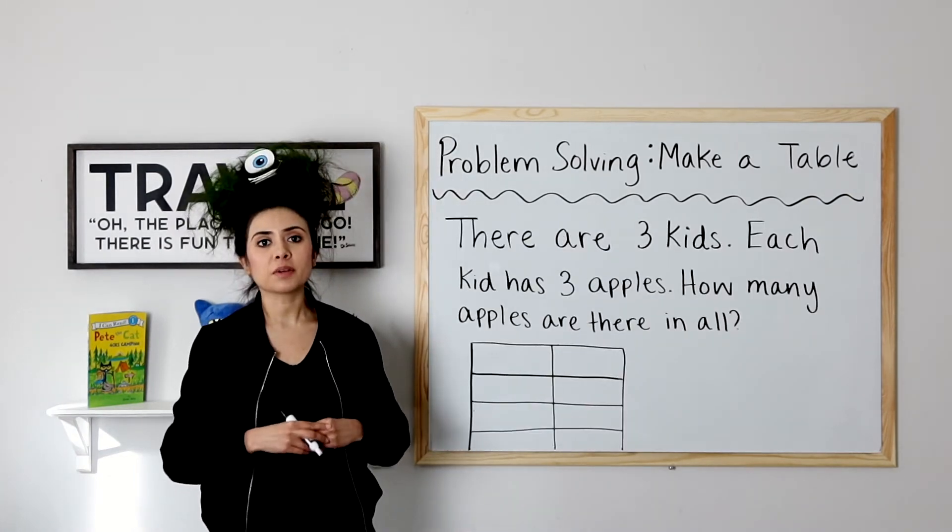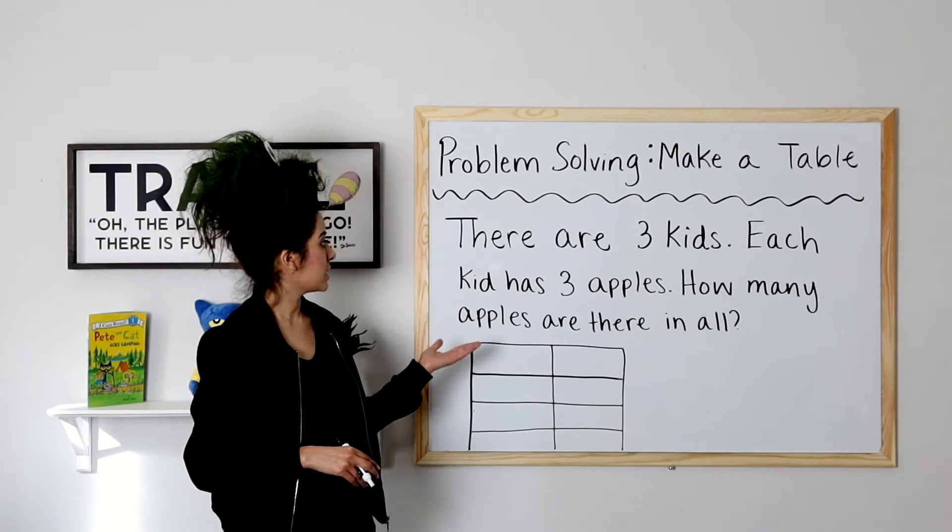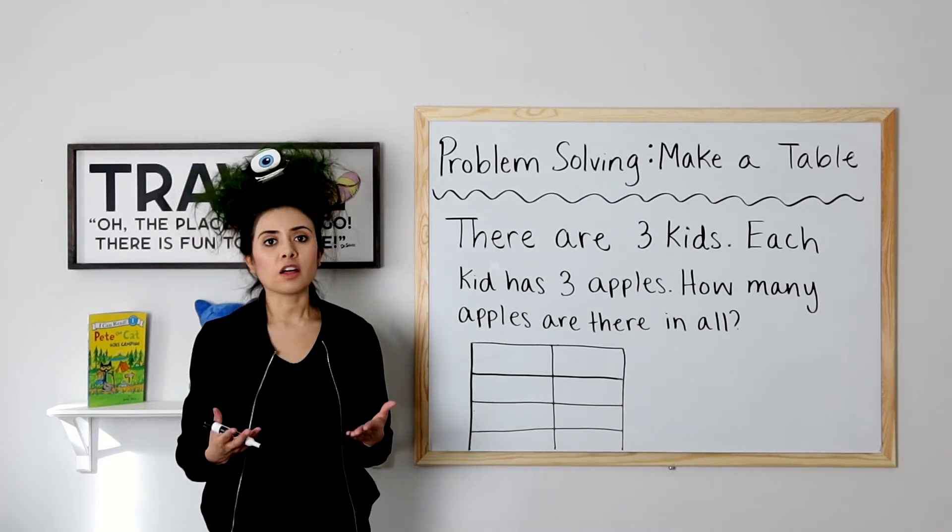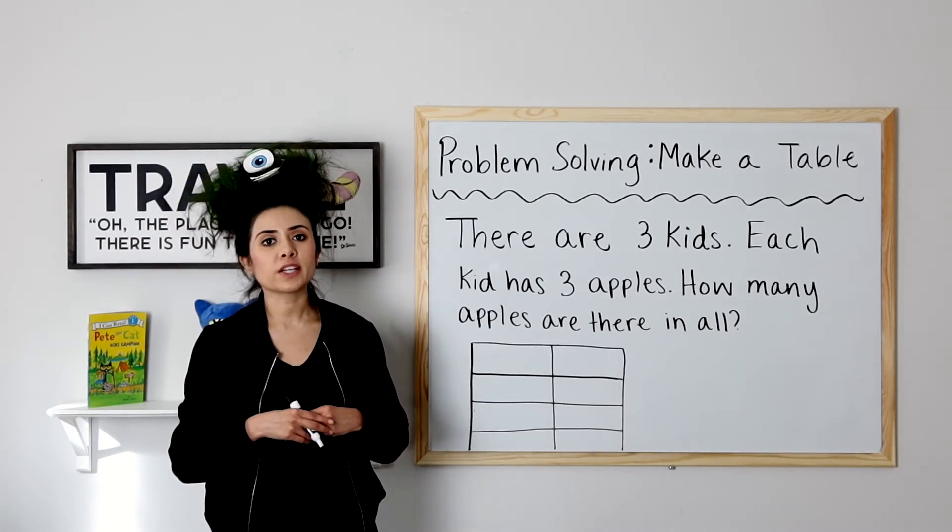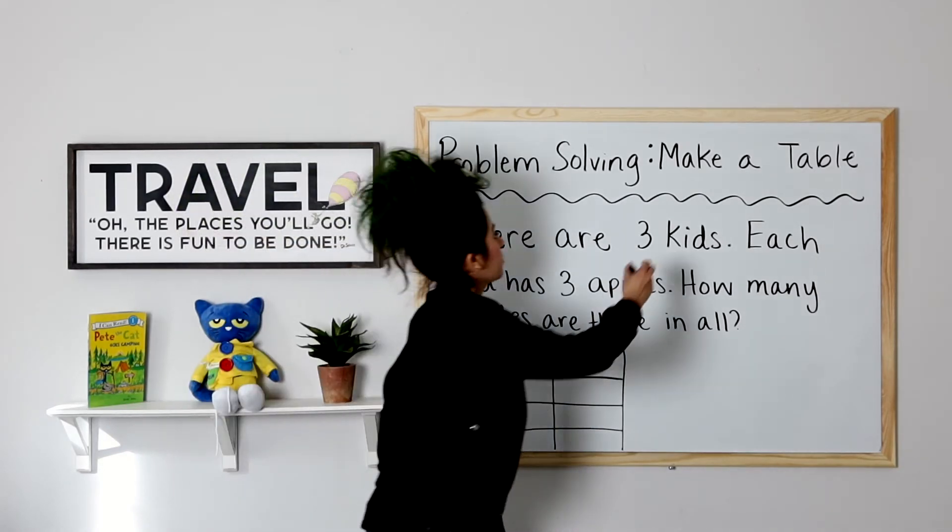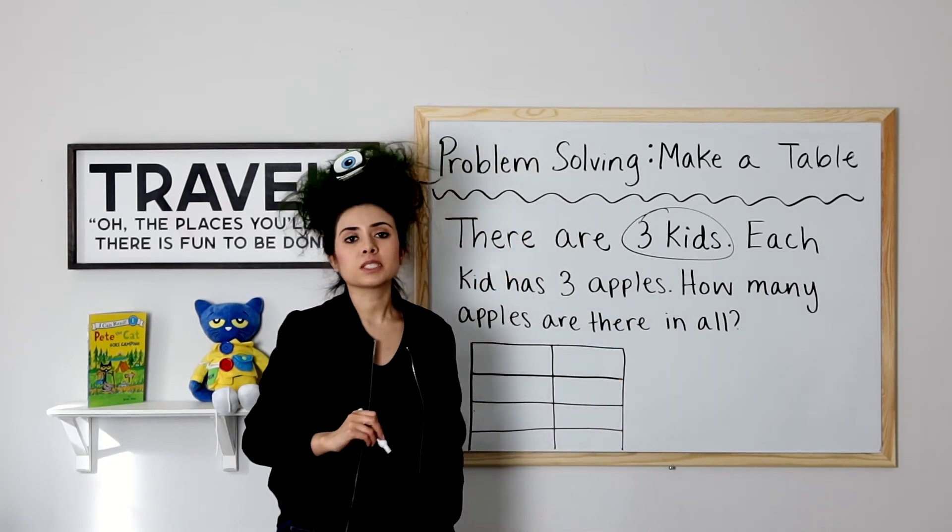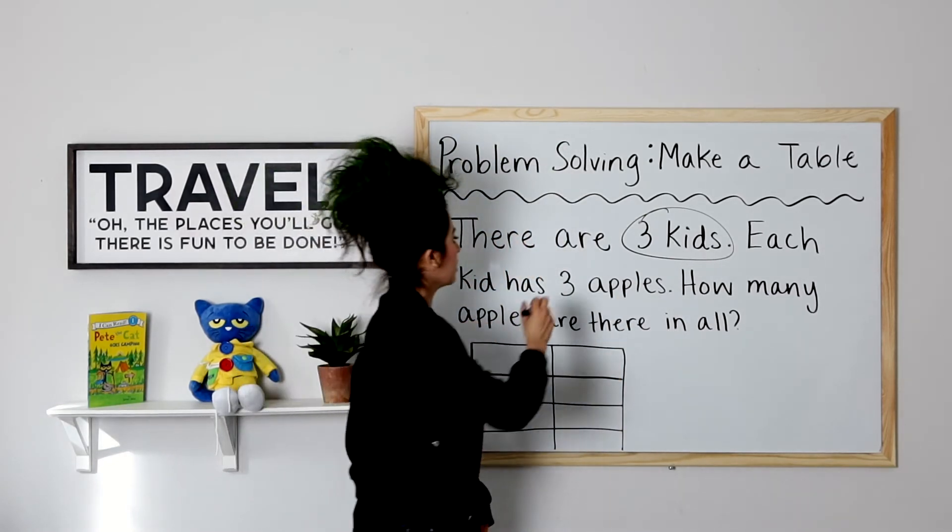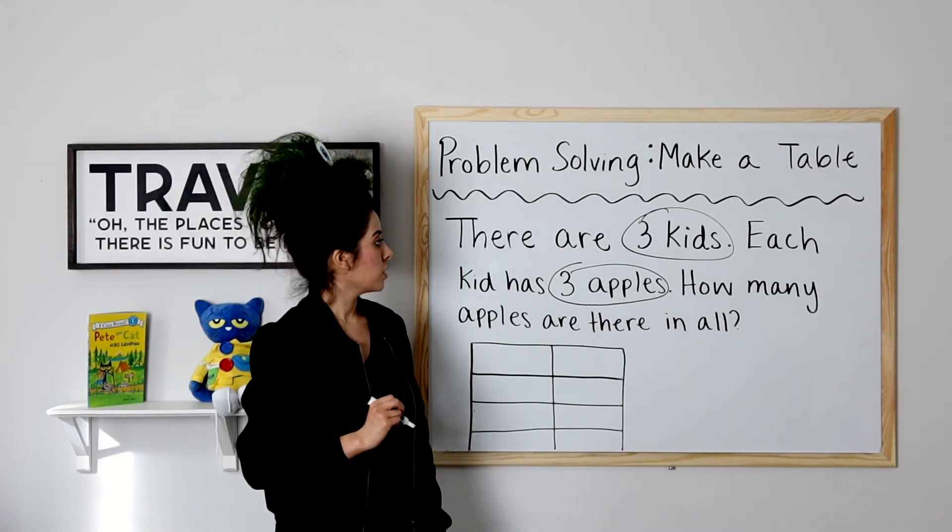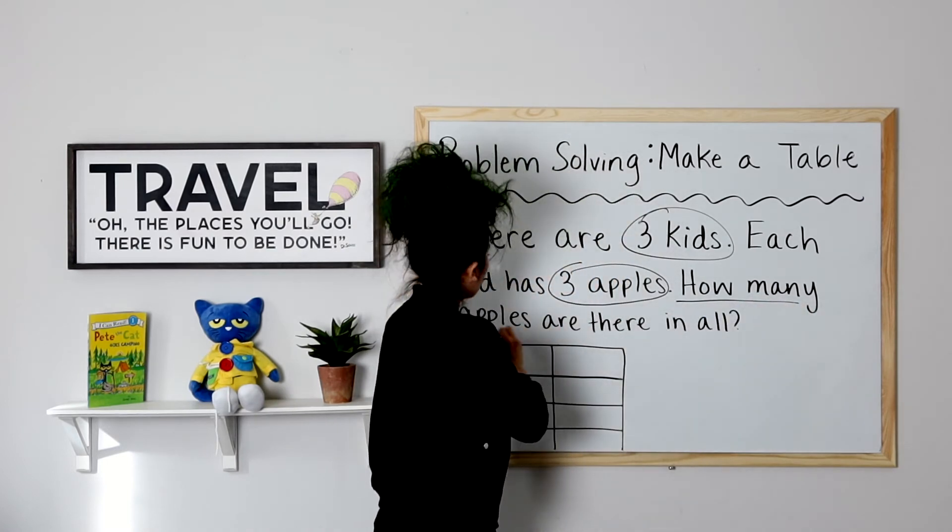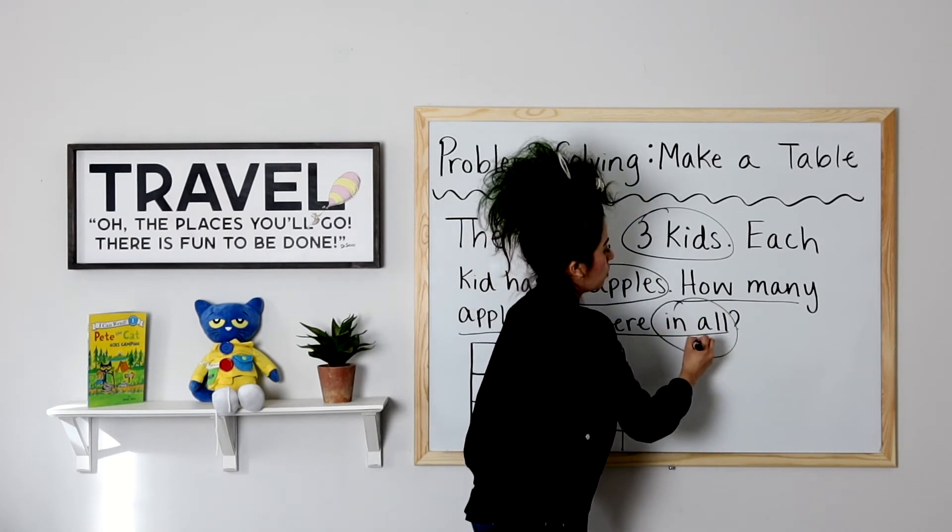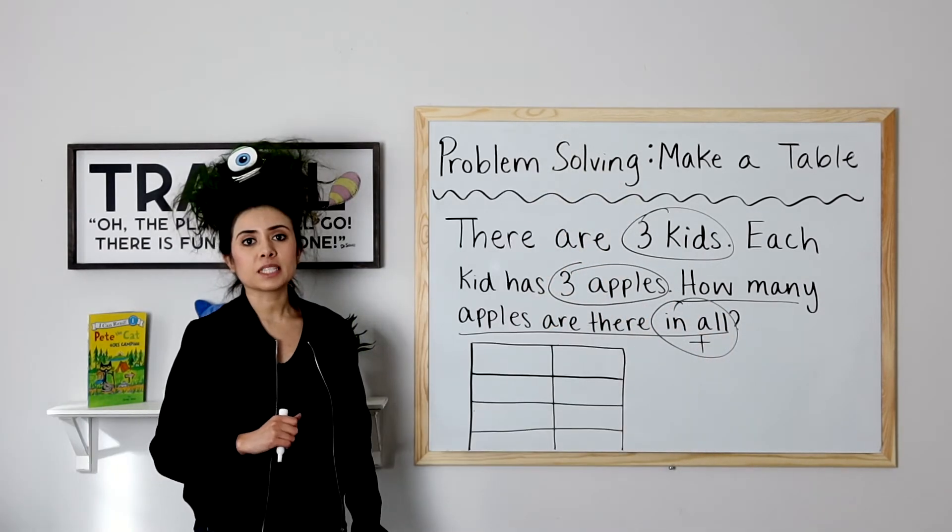Example two. First step, read the problem. There are three kids. Each kid has three apples. How many apples are there in all? Second step, circle what we already know. We know that there are how many apples. How many apples does each kid have? Three. Next step, underline what we want to find out. We want to know how many apples are there in all. And when we see in all, we know we will add.